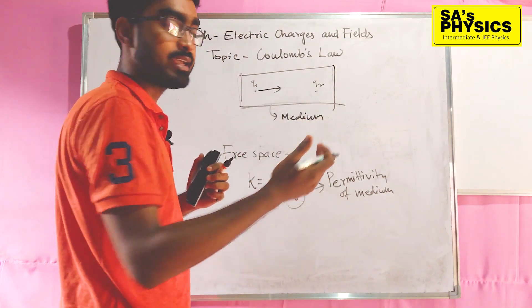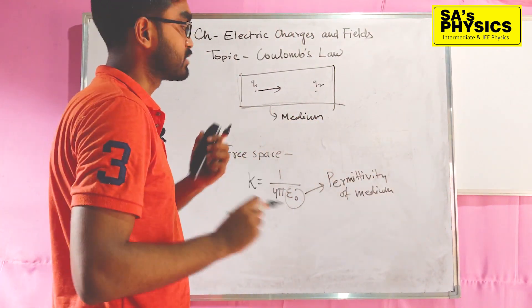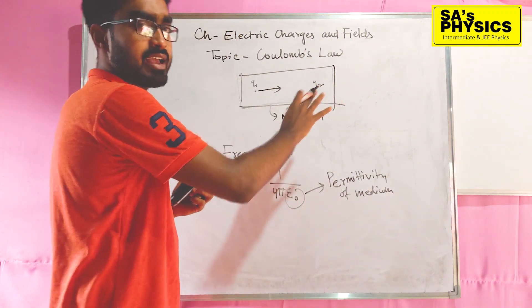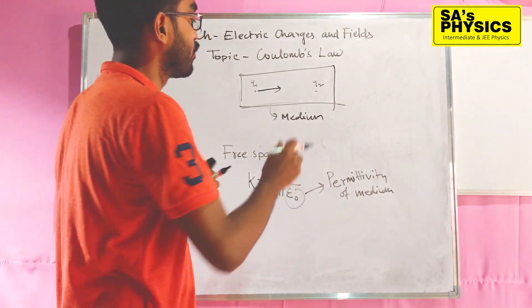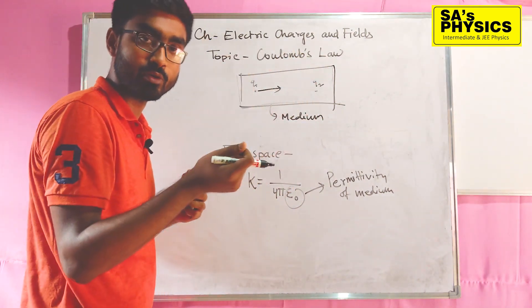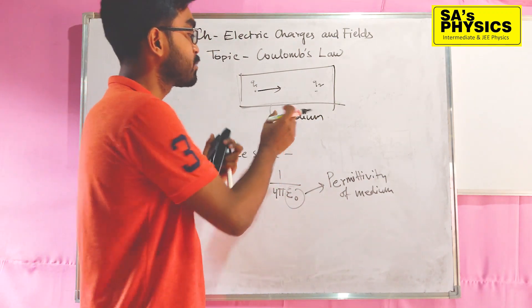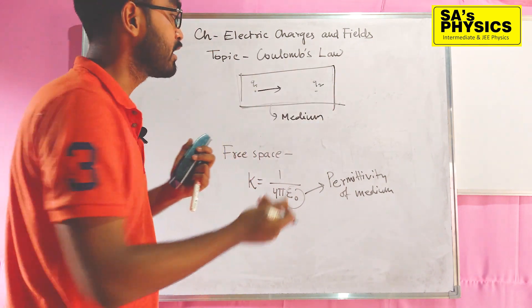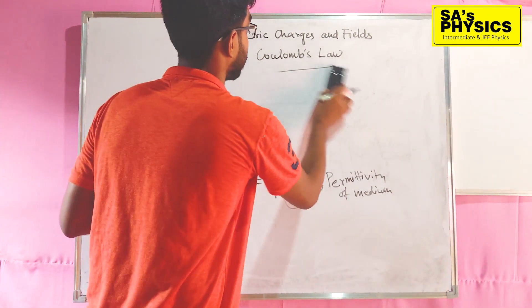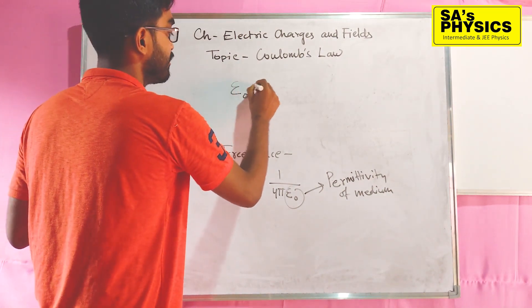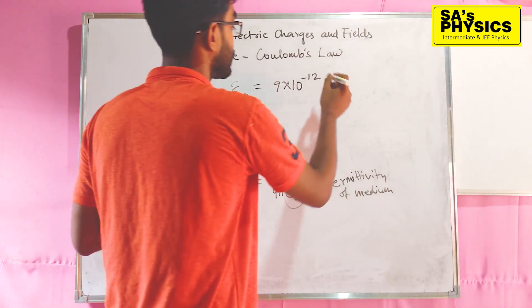Medium ka jis property ke liye force mein reduction hota hai, us property ko hum log kehte hain permittivity of that particular medium. Simple bhaasha mein: do point charges ek doosre ko force daal rahe hain. Agar hum log ek medium mein 2 point charges rakhenge, to woh medium kuch amount of force preserve kar lega — jis property ke liye us force ka kuch magnitude reduce hota hai, use hum log permittivity kehte hain. In case of free space, the permittivity value is 9 into 10 power minus 12.